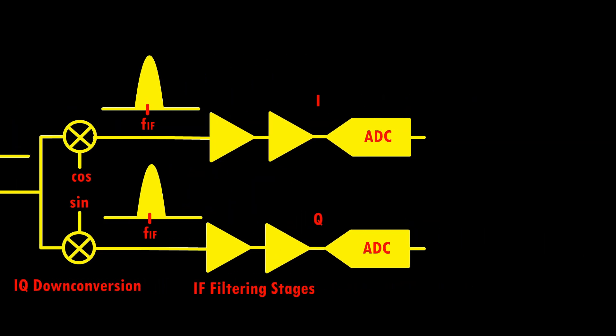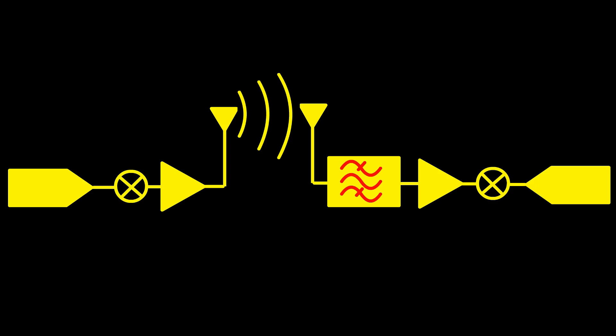Now the I and Q baseband signals are in good shape to be digitized by an analog-to-digital converter — they have been amplified, filtered, and down-converted to low frequency. The ADC converts the received signal back to I and Q digital bit streams, which can then be combined to generate the transmitted signals. This concludes our explanation of the wireless communication setup. The basic building blocks — modulation, amplification, filtering, and up-conversion — work together to enable reliable data transmission over vast distances.